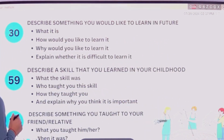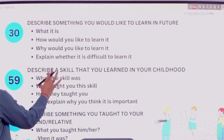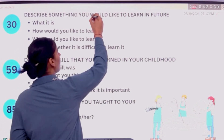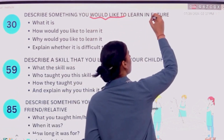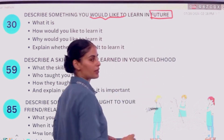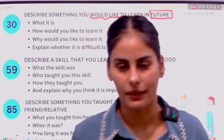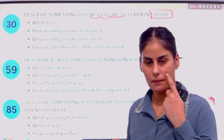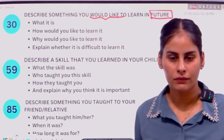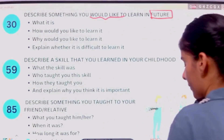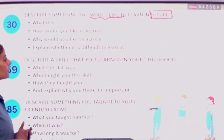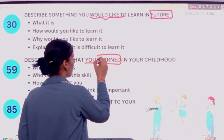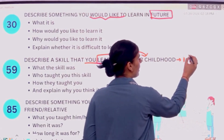We are supposed to talk about what we want to learn in the future — something that you would like to learn. Now, the next cue card asks: describe a skill that you learnt in your childhood. So you have a skill that you learned during your childhood, which means the tense is past.